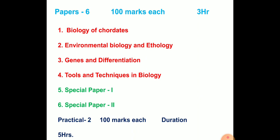First paper is biology of coordinates. Second is environmental biology and ethology. Third is genes and differentiation. Fourth is tools and techniques in biology. Next, your 5th and 6th papers — both are your special papers. In MSc, you have two special papers in the final year.